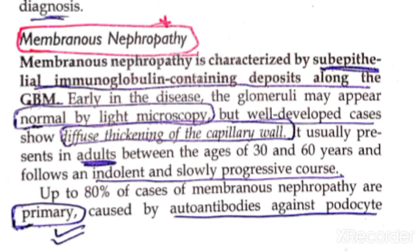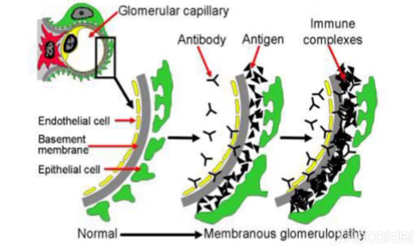Membranous nephropathy is characterized by subepithelial immunoglobulin-containing deposits along the glomerular basement membrane. This is the hallmark of membranous nephropathy.